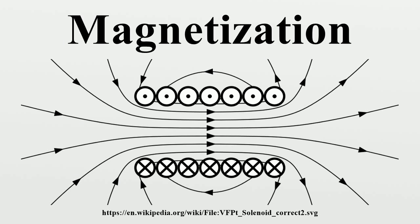The origin of the magnetic moments responsible for magnetization can be either microscopic electric currents resulting from the motion of electrons in atoms, or the spin of the electrons or the nuclei. Net magnetization results from the response of a material to an external magnetic field, together with any unbalanced magnetic dipole moments that may be inherent in the material itself.